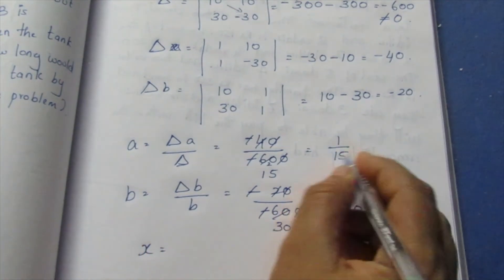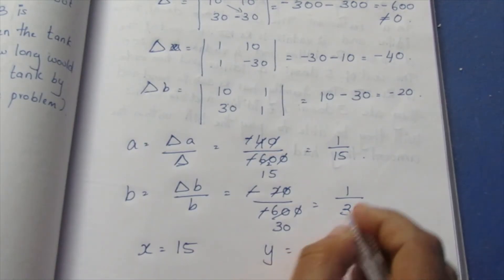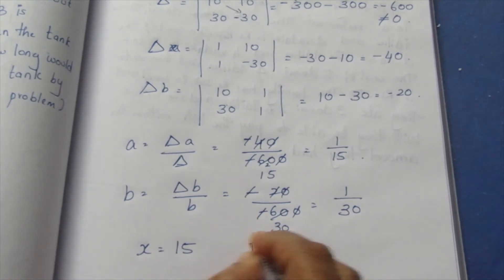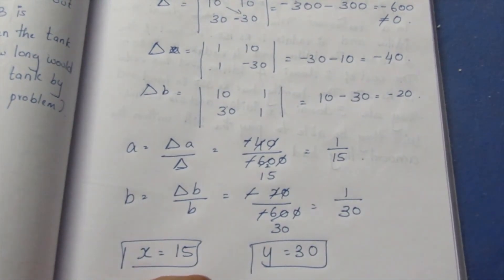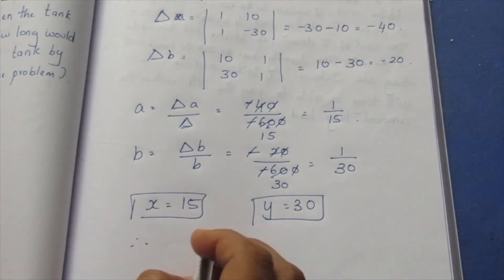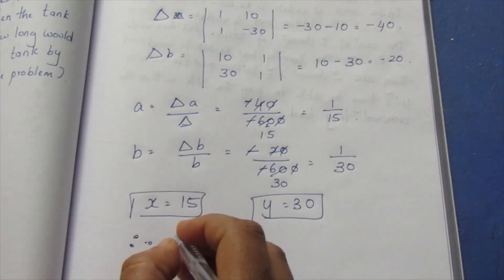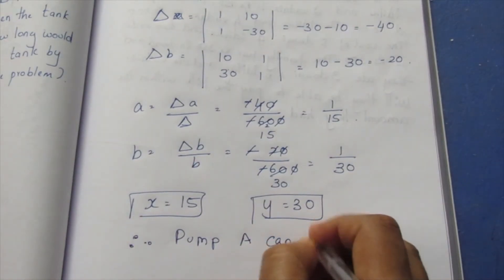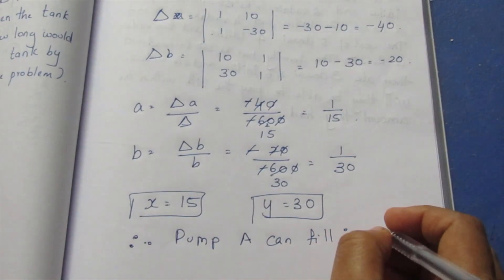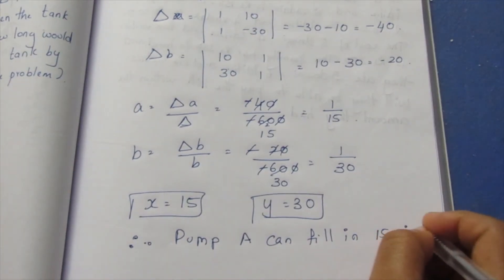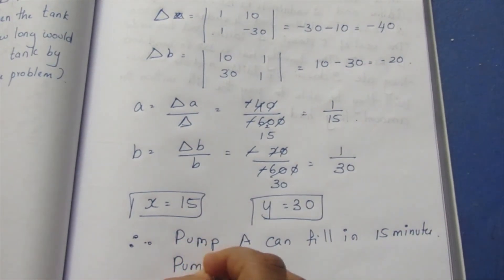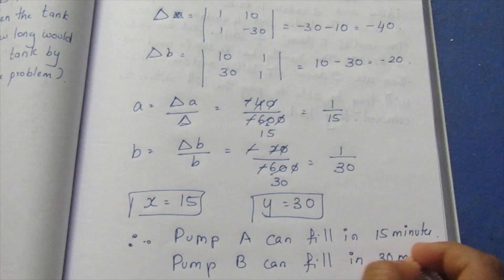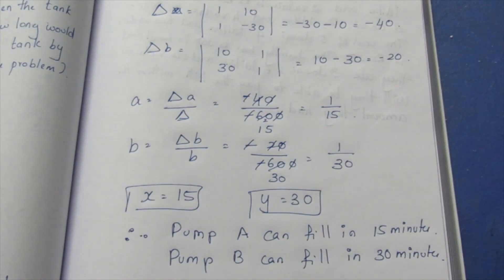So x is the reciprocal of A, which is 15, and y is equal to 30. Since 1 by x equals A, x equals 15. Therefore, pump A can fill the tank in 15 minutes and pump B can fill the tank in 30 minutes. That's the solution. Thank you.